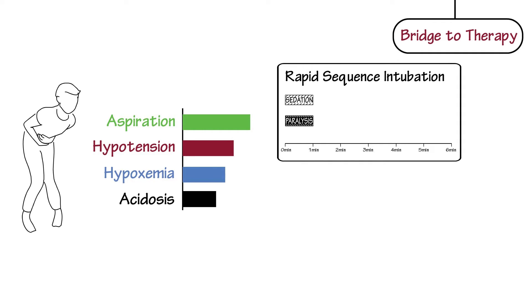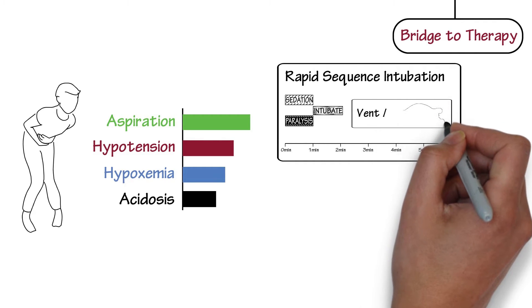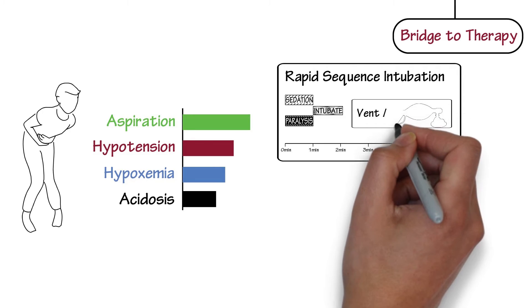This is where a sedative and paralytic are given nearly simultaneously with no positive pressure ventilation before attempts at laryngoscopy. This way, you don't insufflate the stomach. And with rapid paralysis, massive vomiting and aspiration is unlikely.